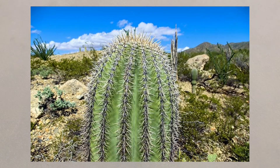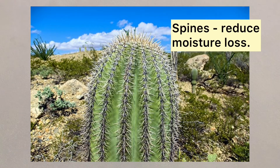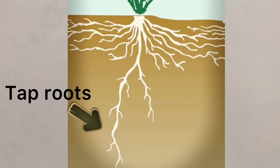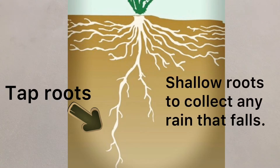To help reduce the loss of moisture, plants like cacti have thin, waxy leaves or spines. They may have a few long tap roots to help reach down into groundwater sources, but will have many shallow, horizontal roots that allow rapid intake of any surface moisture.